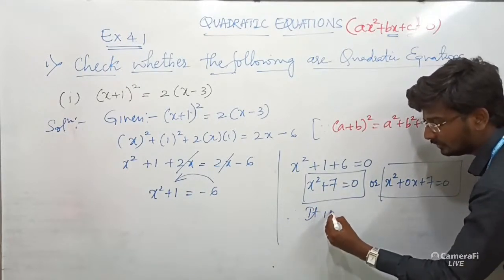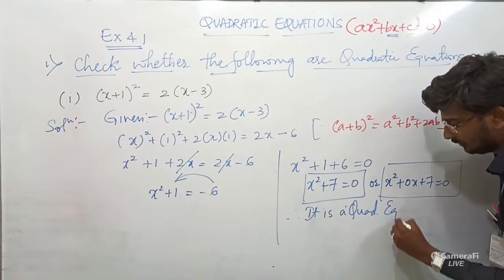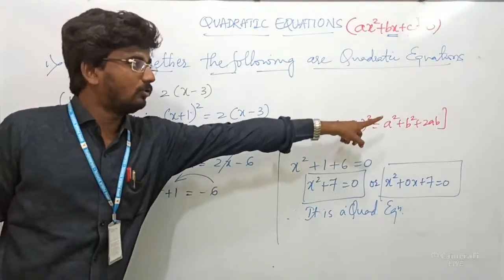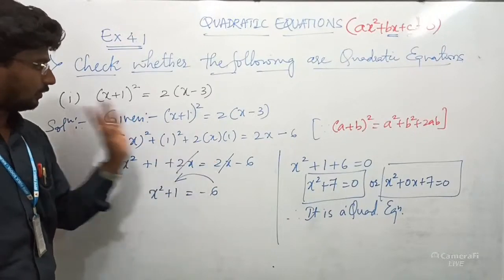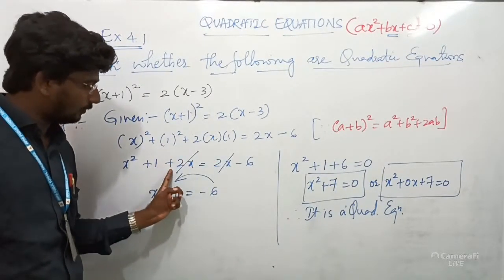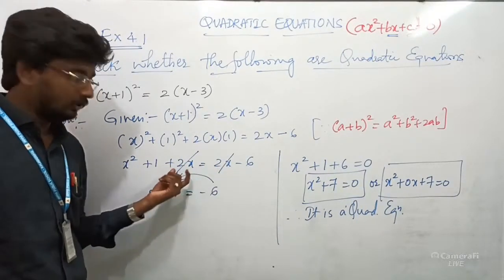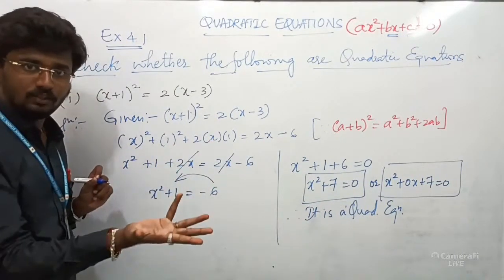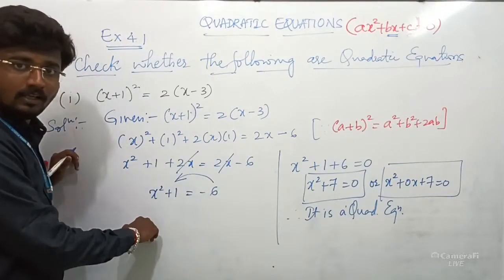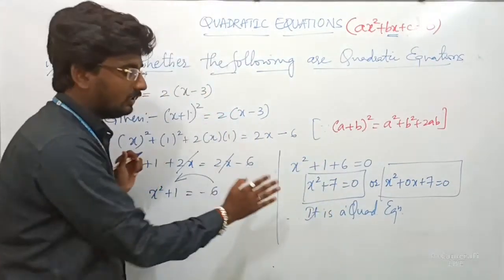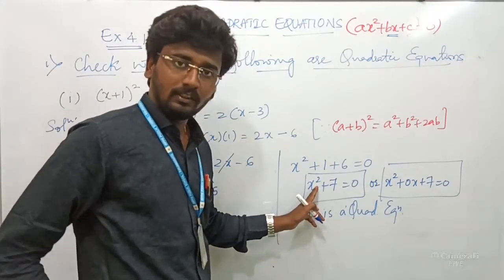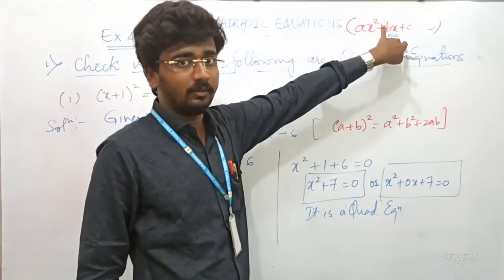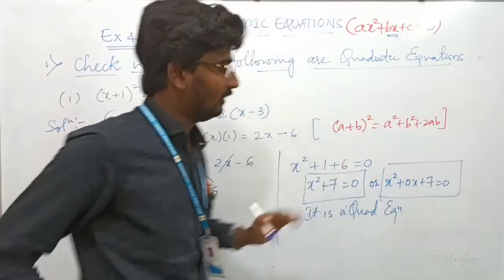Therefore, it is a quadratic equation. To summarize: take the given equation, apply the identity — here (A + B)² — multiply the bracket terms. On the LHS and RHS, the +2X terms have the same sign and variable, so they cancel. X² + 1 remaining, and −6 from the RHS becomes +6 on the LHS, giving X² + 7 = 0. Since there is an X² term, it is a quadratic equation. The missing BX (linear) term is represented as 0X.